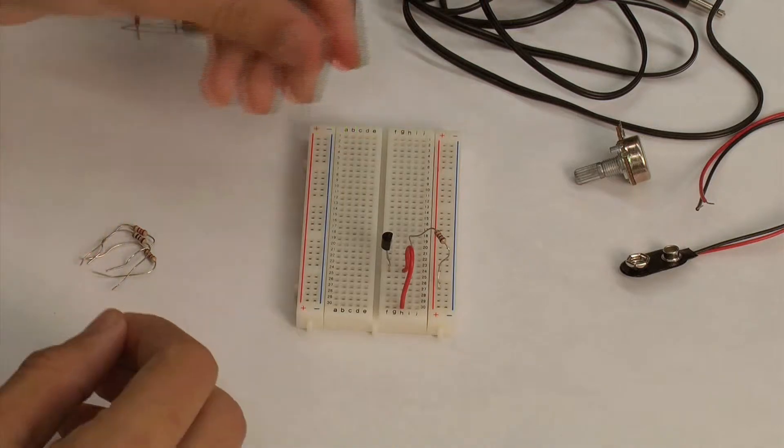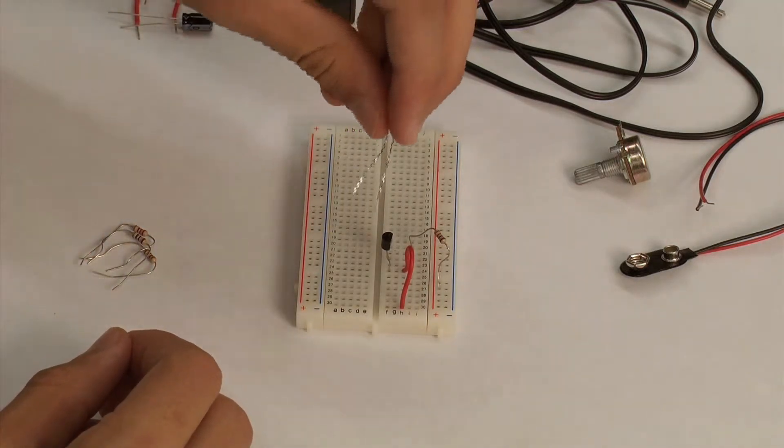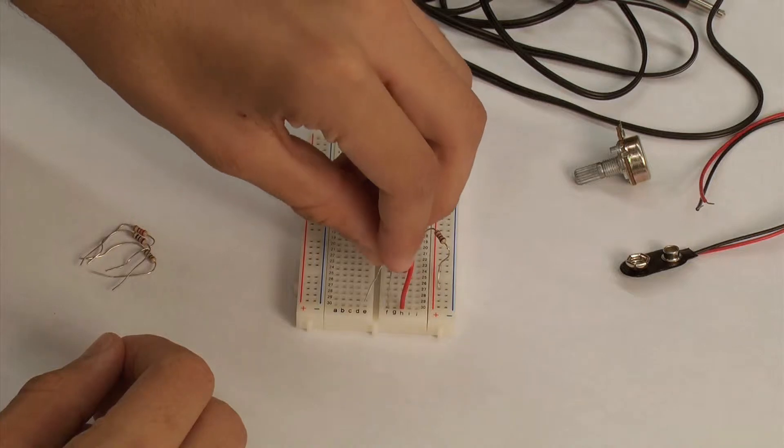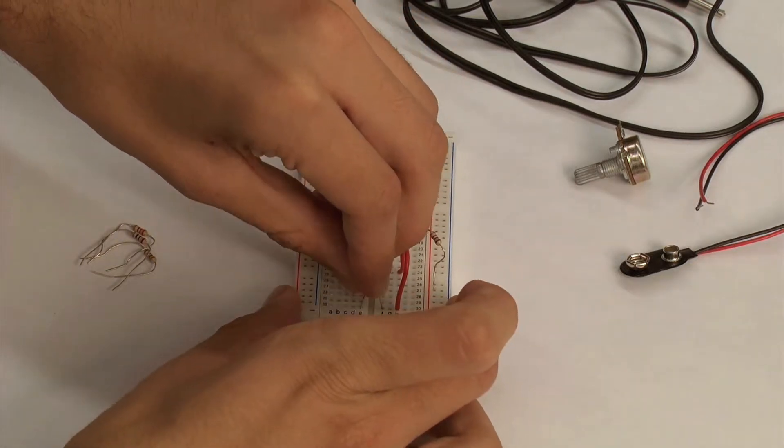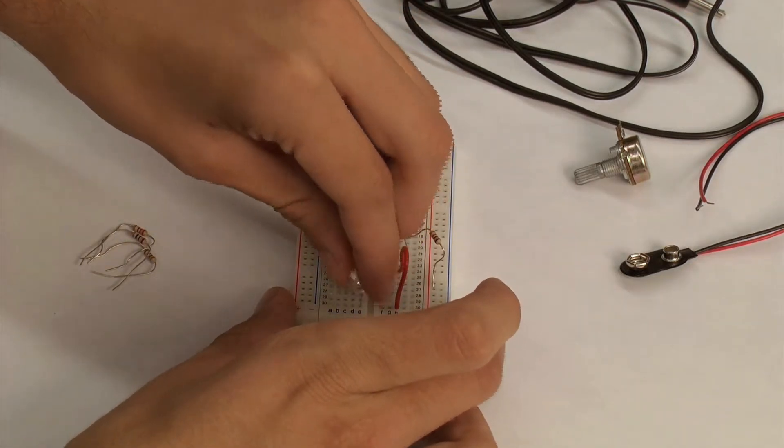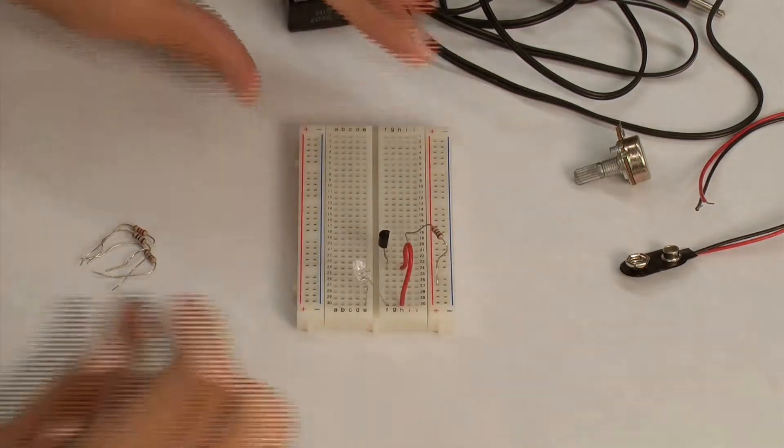The infrared LED converts electrical energy into light. Again, the longer wire is positive and the shorter wire is negative. Be sure to check that the correct sides of the LED are inserted into the appropriate spot on the breadboard.